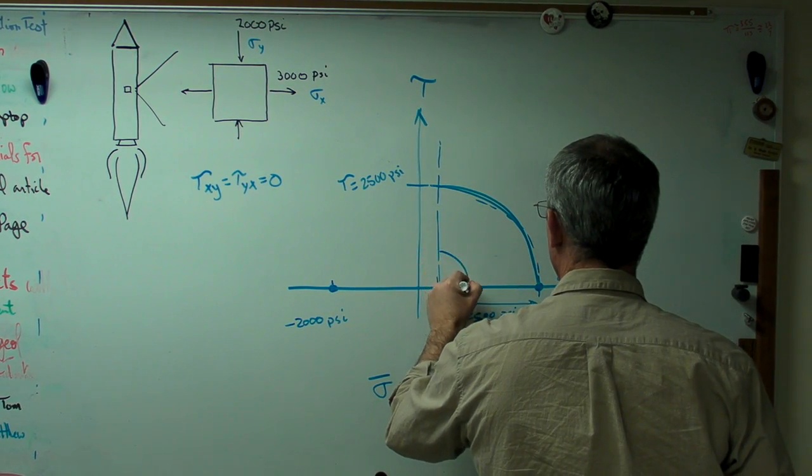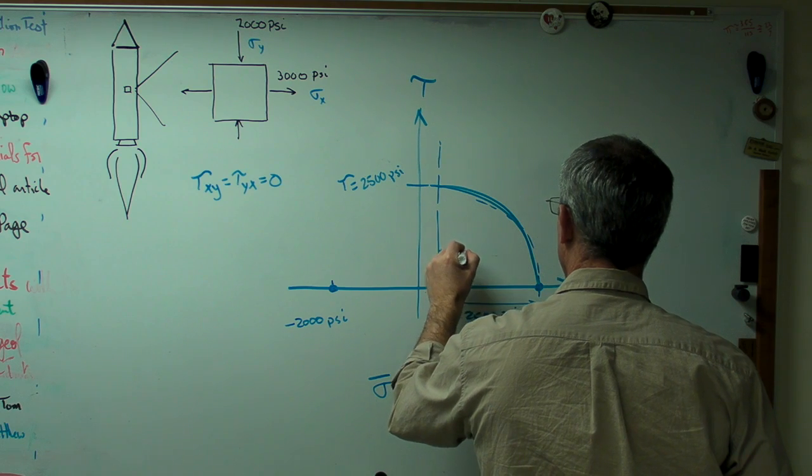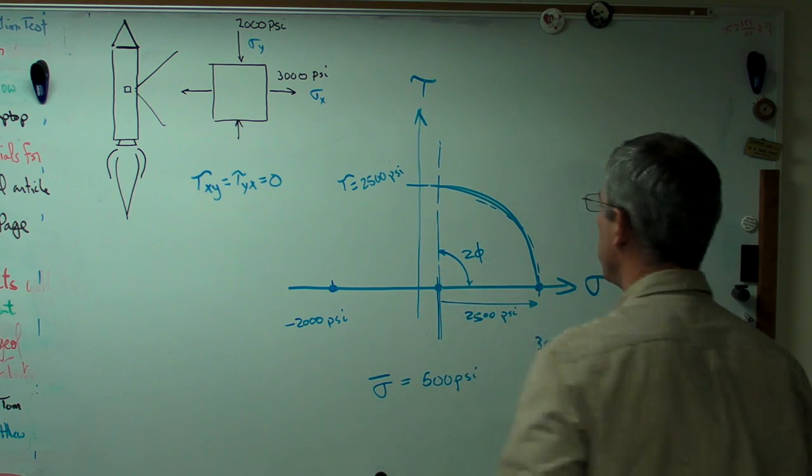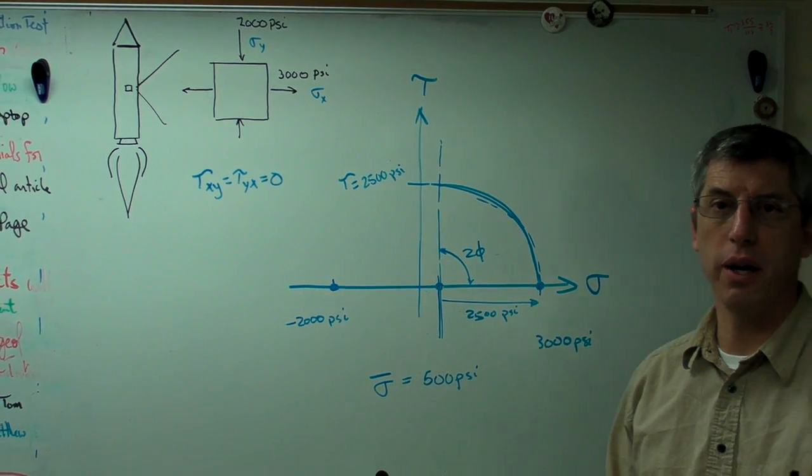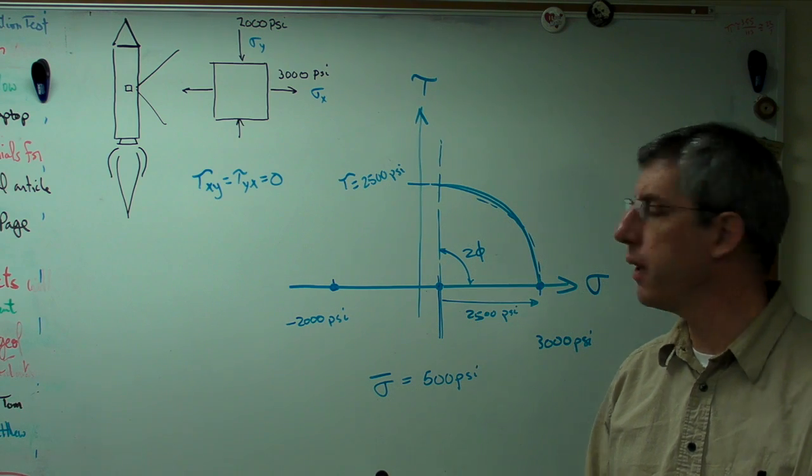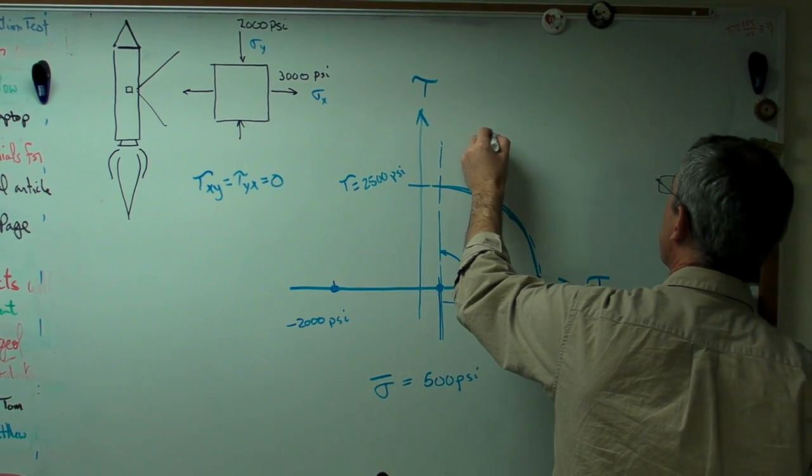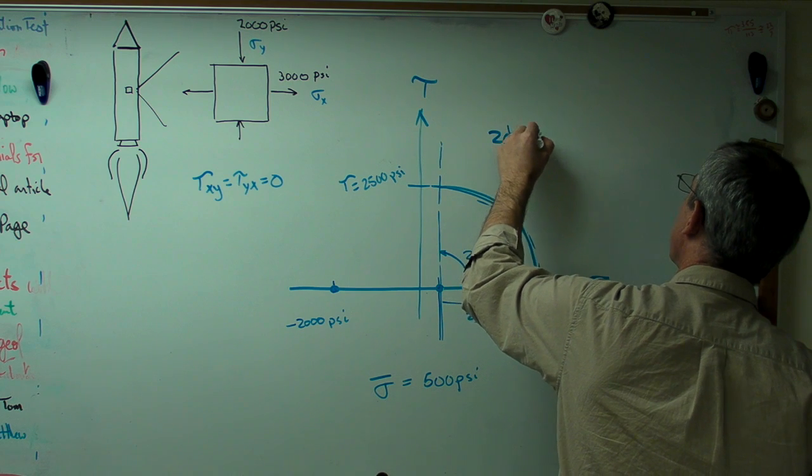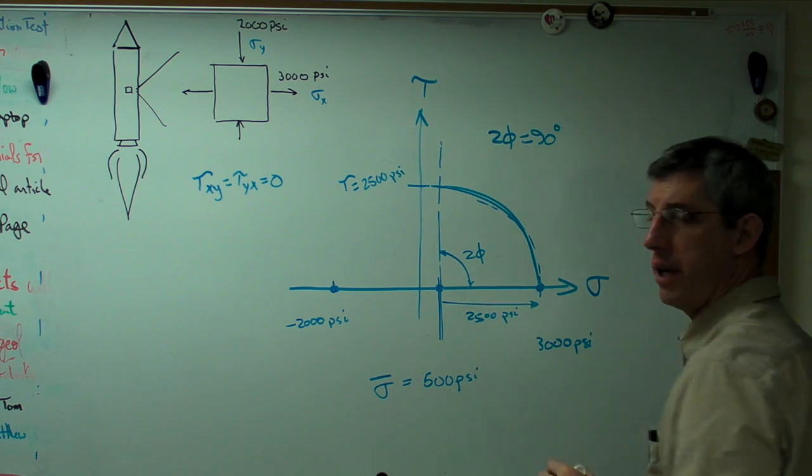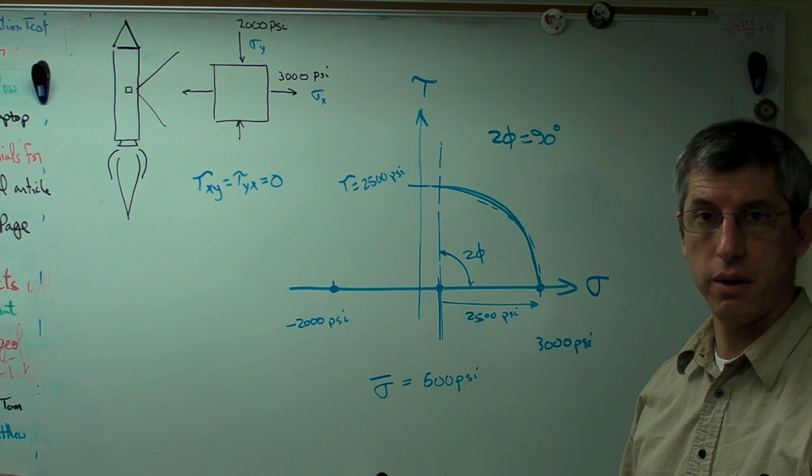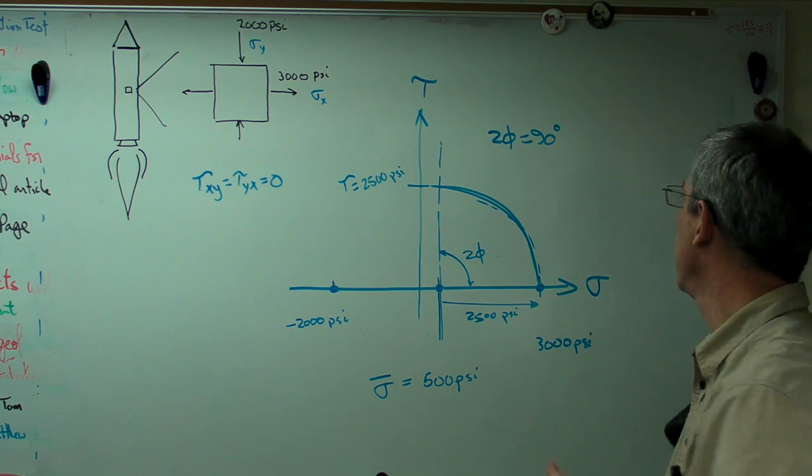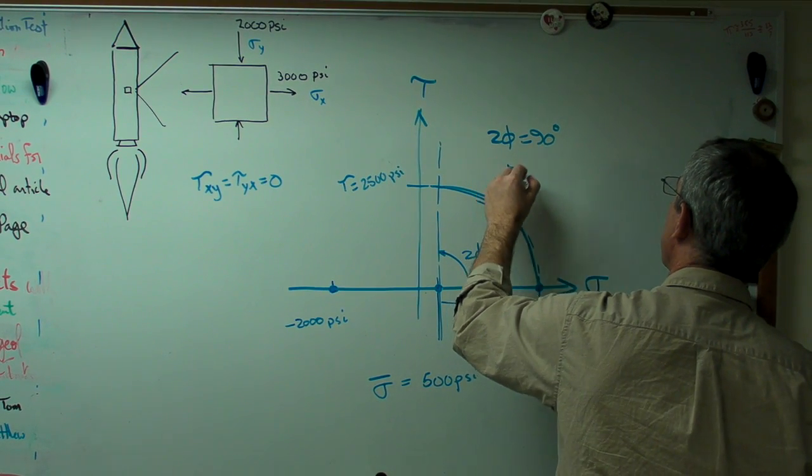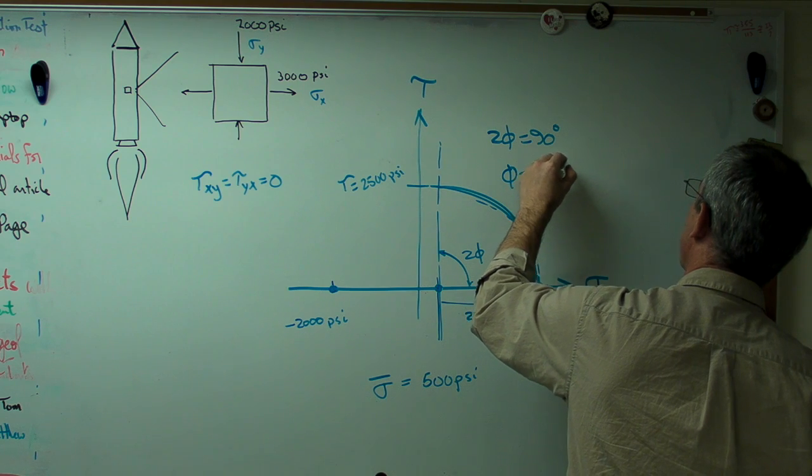Because of the way Mohr's circle is constructed, this angle here is called 2 phi. It's twice the angle that you'd see geometrically. Since 2 phi is 90 degrees on my tau sigma plot, then phi equals 45 degrees.